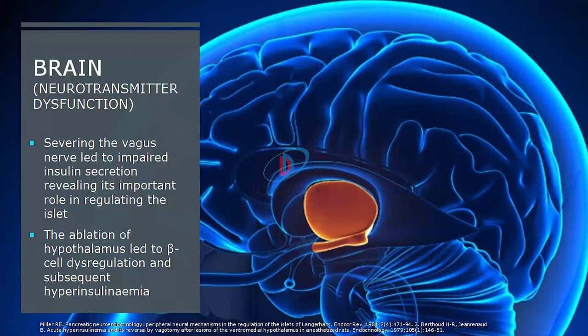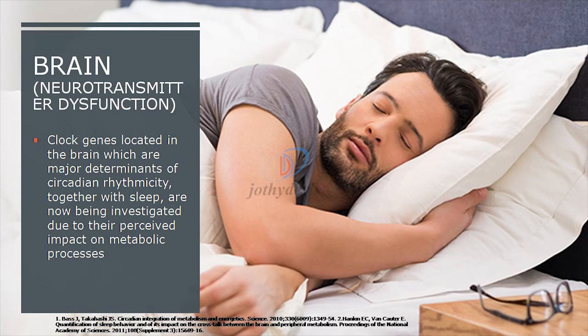Another pathophysiological defect is neurotransmitter dysfunction in the brain. Cutting the vagus nerve or ablating the hypothalamus can both lead to beta cell dysregulation and subsequent abnormalities in blood sugar regulation. Clock genes — recognized now in every tissue — form the basis of the new specialty of chronomedicine, and are major determinants of circadian rhythmicity now being investigated for their perceived impact on metabolic syndrome.